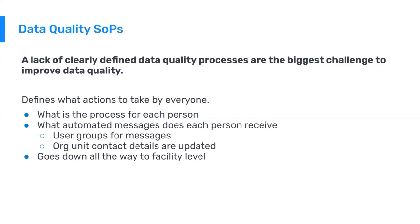Every single person along the process should be looking out for data quality issues. Ensuring data quality is everyone's job. If a data quality issue is found at any of these levels, that person should have a very clear idea of what they need to do about it. A lot of the standard operating procedures can be aided by DHIS-2 or the HMIS — for example, DHIS-2 can produce automated messages, send alerts, notifications, and even reminders to individuals to follow up or do their part of the standard operating procedure for data quality.